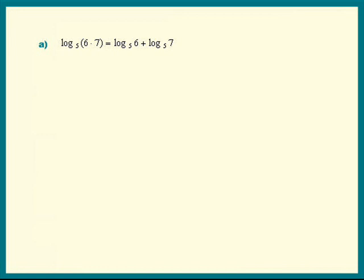Log of 6 times 7 is log of 6 plus log of 7. Remember to keep the base the same. All the logs in this problem have base 5.